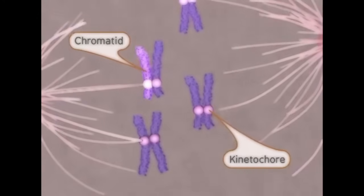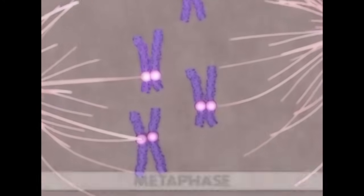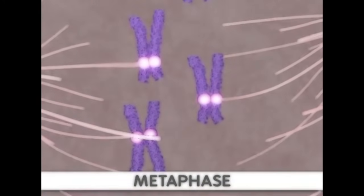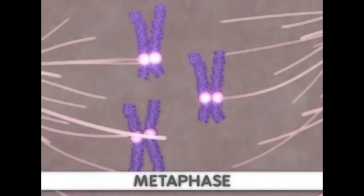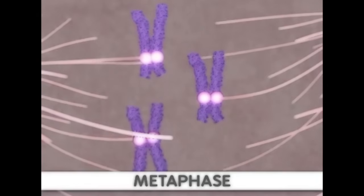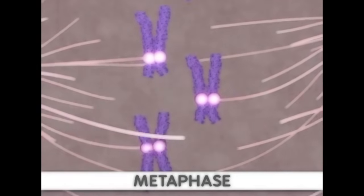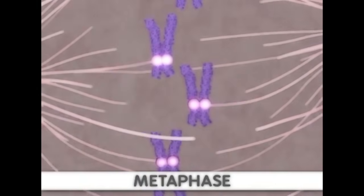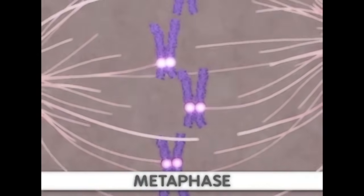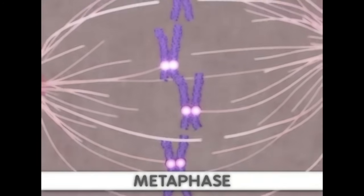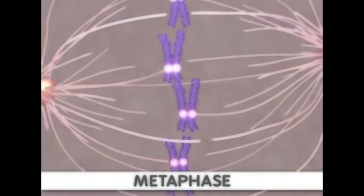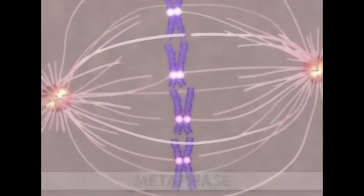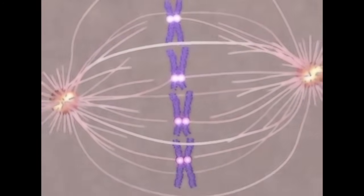Next comes metaphase. During this stage, the sister chromatids align along the center of the cell, so that both chromatids face toward opposite poles of the cell. Now, the sister chromatids are ready to be separated.